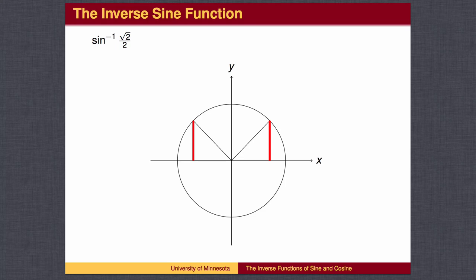For the inverse sine, we have to choose between the right half of the circle or the left half. We will choose the right half, so that the output of the inverse sine function is always between negative 90 degrees and 90 degrees.